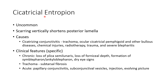Now let us discuss about cicatricial entropion. It is uncommon and occurs due to vertical scarring which shortens the posterior lamella. The causes of cicatricial entropion are cicatricial conjunctivitis which can be due to trachoma, ocular cicatricial pemphigoid, and other bullous diseases. It can also occur due to chemical injuries, radiotherapy, trauma, and severe blepharitis.